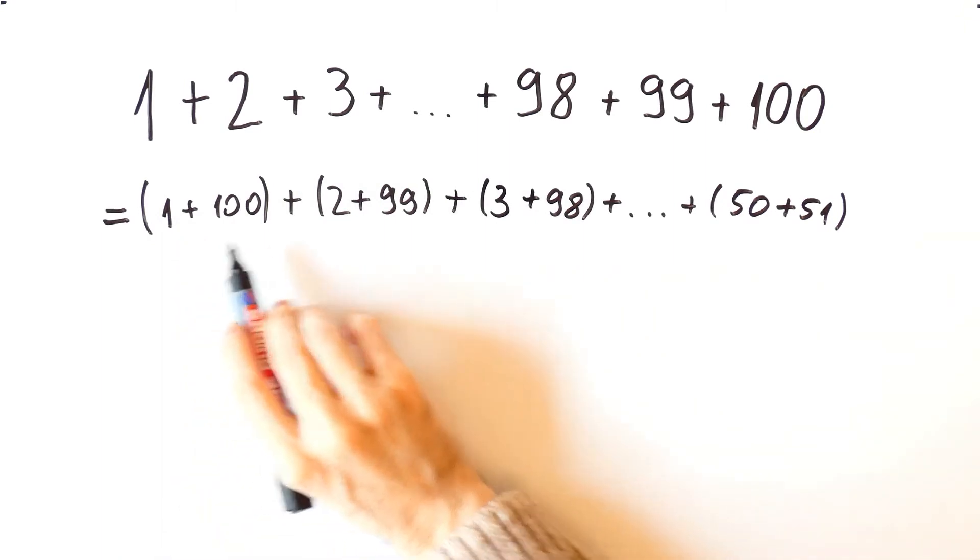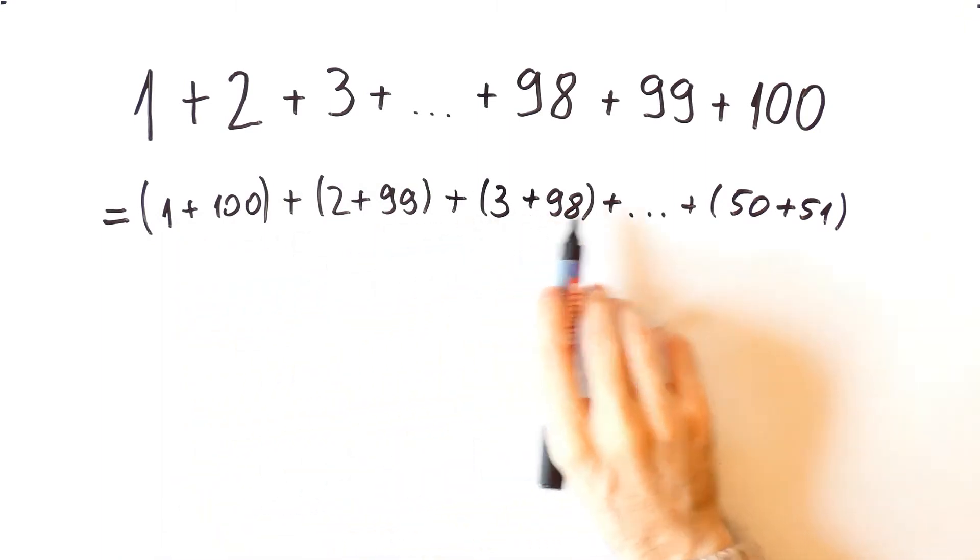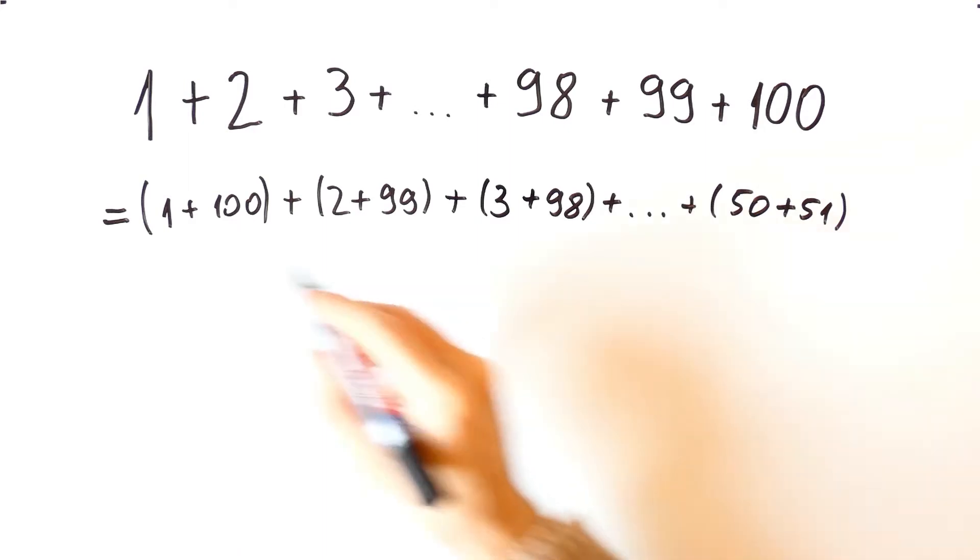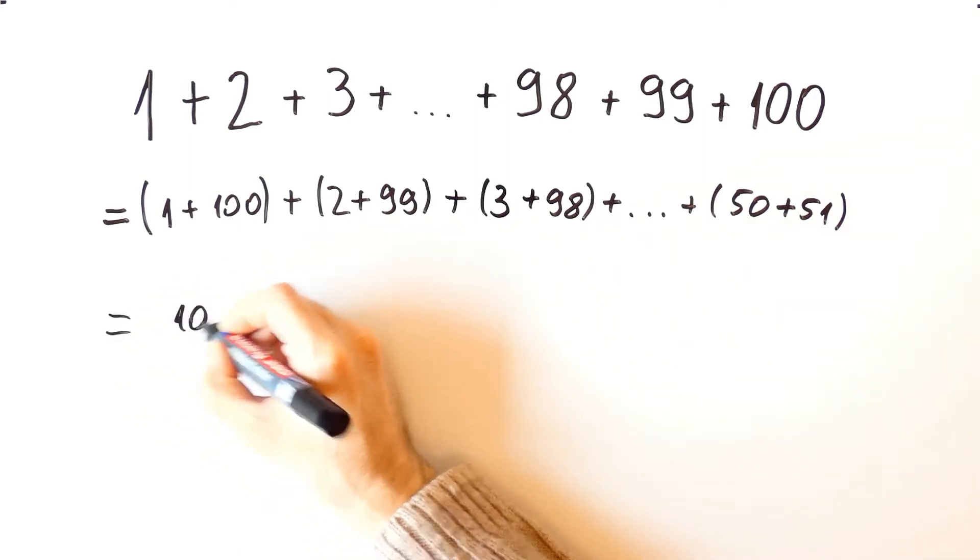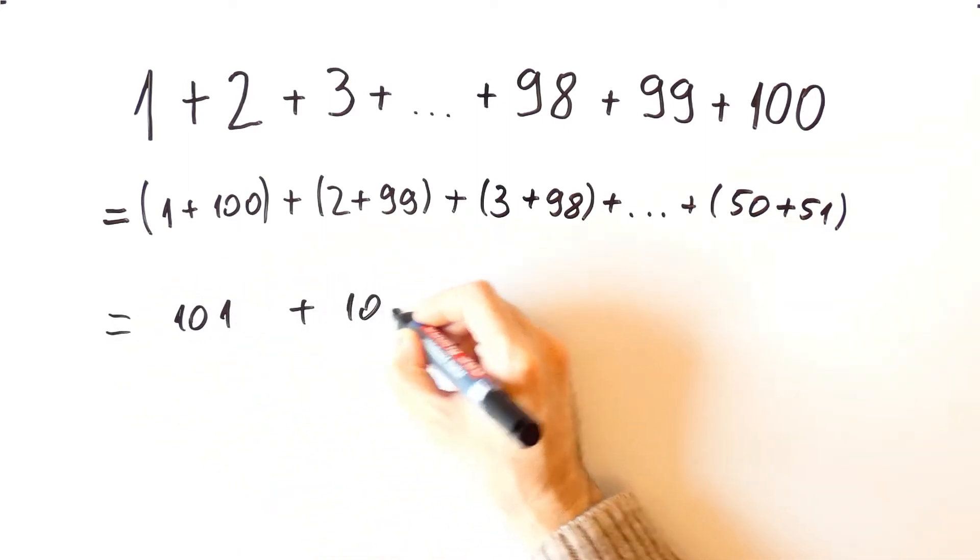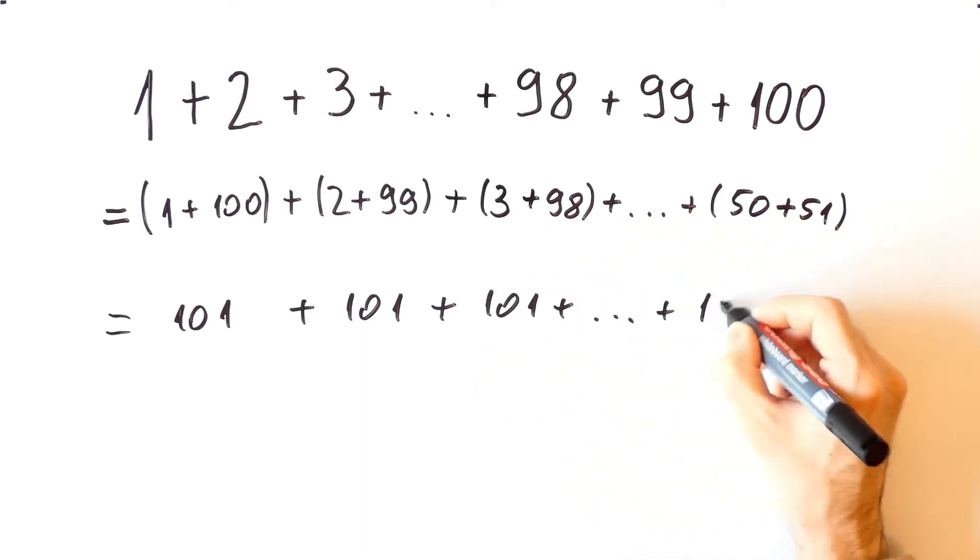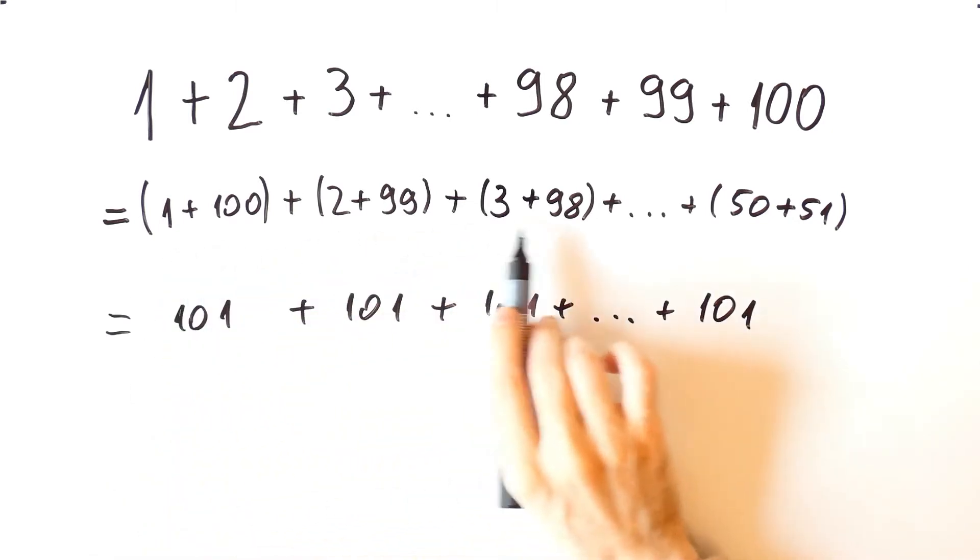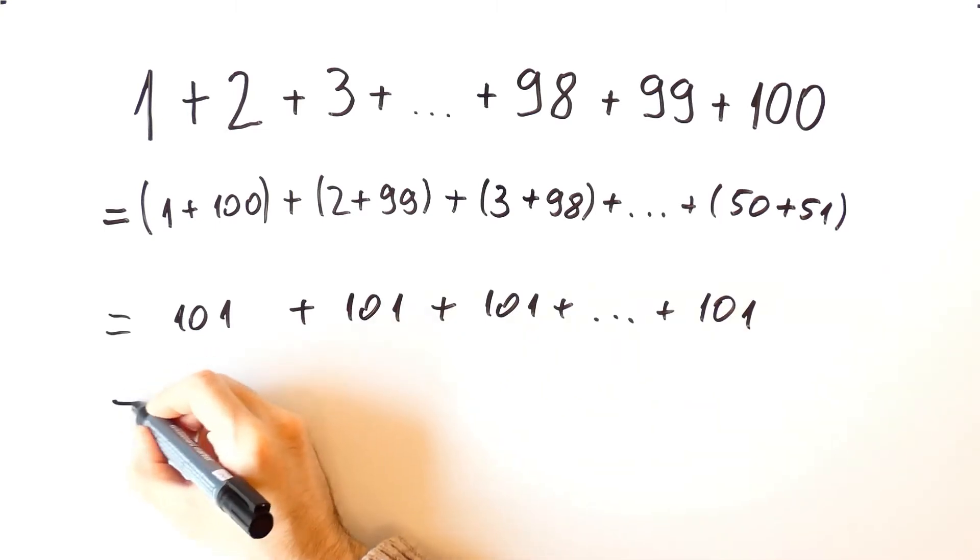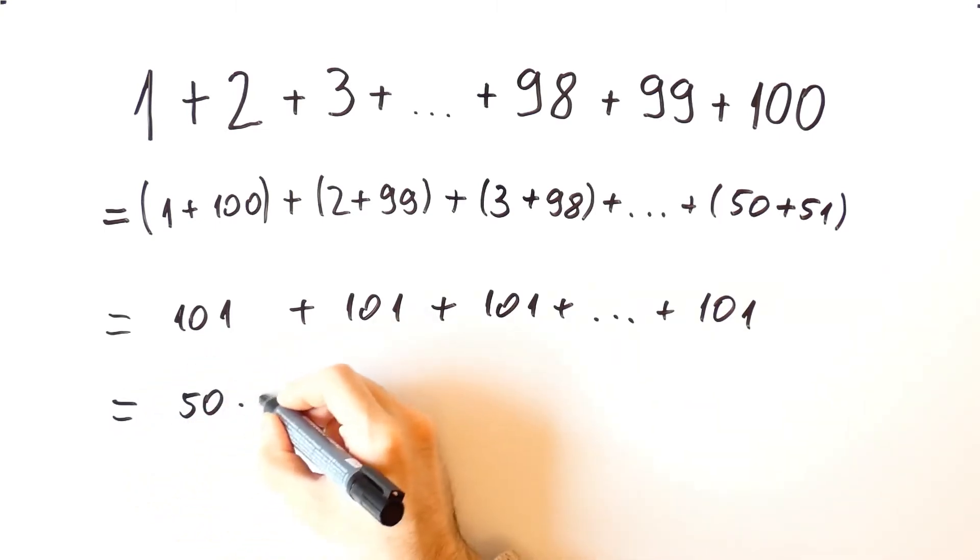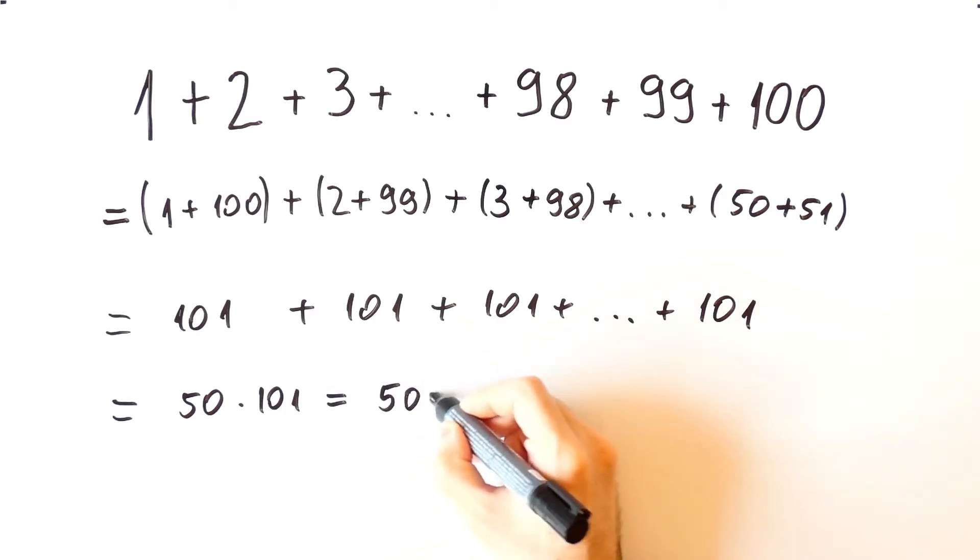Each sum inside parentheses is equal to 101, so this is equal to 101 plus 101 plus 101. And we have 1, 2, 3, 50 times 101, so this is equal to 50 times 101, and that is equal to 5050.